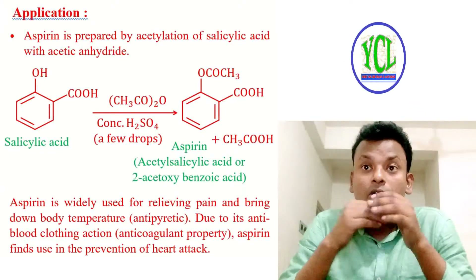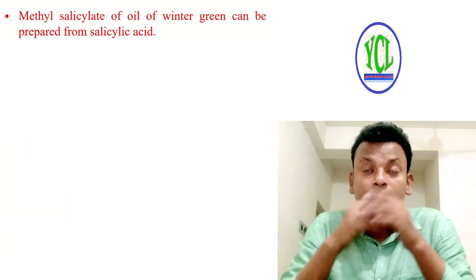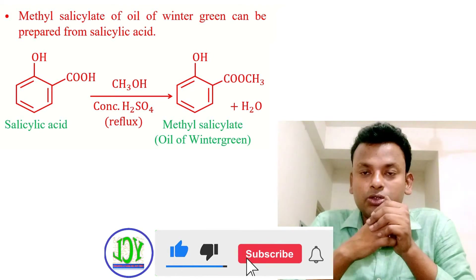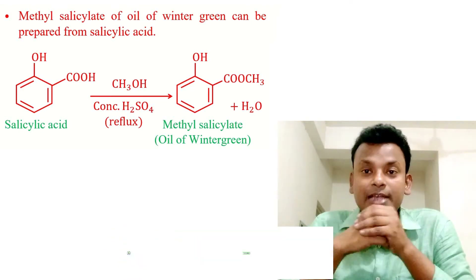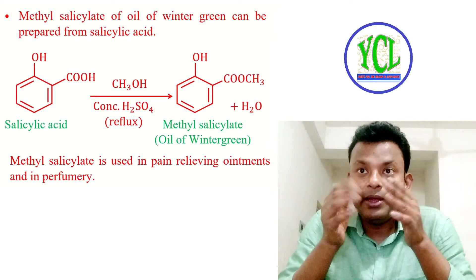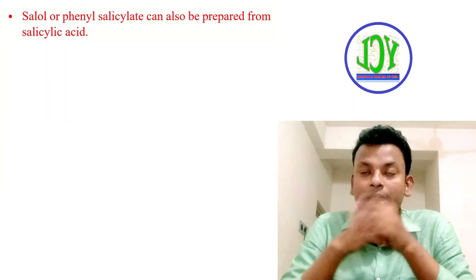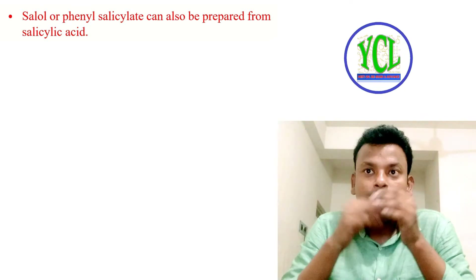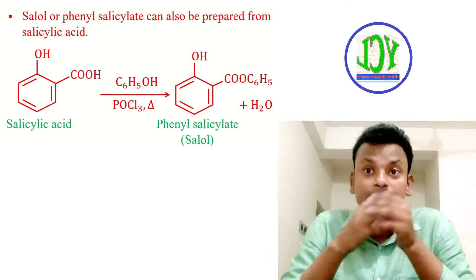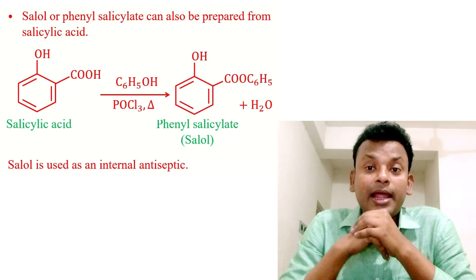Aspirin also finds use in the prevention of heart attacks. Methyl salicylate or oil of wintergreen can be prepared from salicylic acid: salicylic acid reacts with methanol with concentrated H2SO4 under reflux to give methyl salicylate or oil of wintergreen. Phenyl salicylate (salol) can also be prepared: salicylic acid reacts with phenol in the presence of POCl3 and heat to give phenyl salicylate. Salol is used as an internal antiseptic.